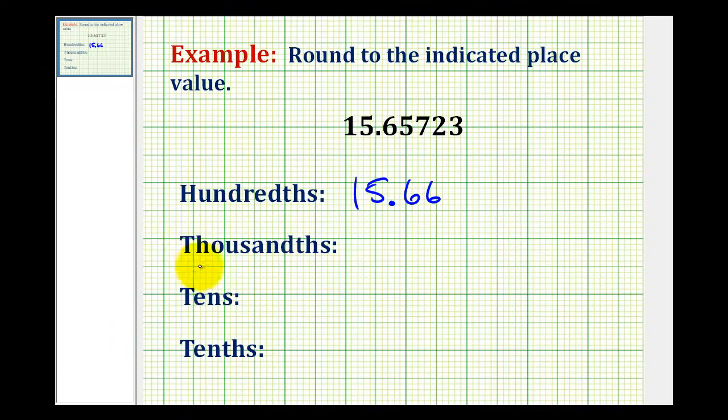Now we want to round to the thousandths place value. So we'll start by determining what digit is in this place value. So we have the tenths, hundredths, and here's the thousandths place value. This two to the right of the seven tells us to round up or down.